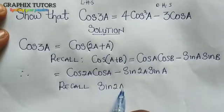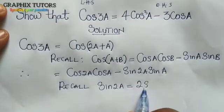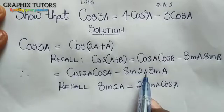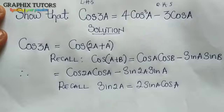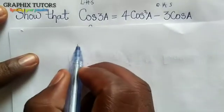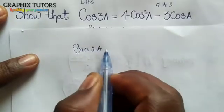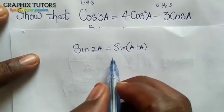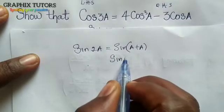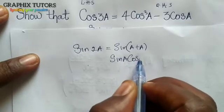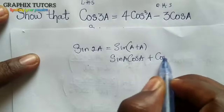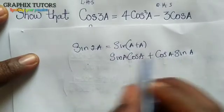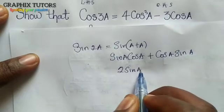Recall: sin 2a is equal to 2 sin a cos a. That is a trig identity — this is a double angle. To show how I got that: sin 2a means sin(a + a). If I expand it, I will have sin a cos a plus cos a sin a. These are the same, so my answer gives me 2 sin a cos a.